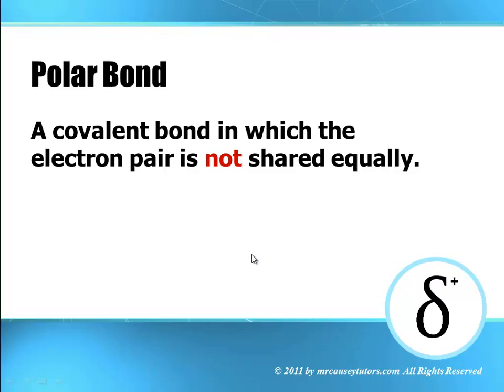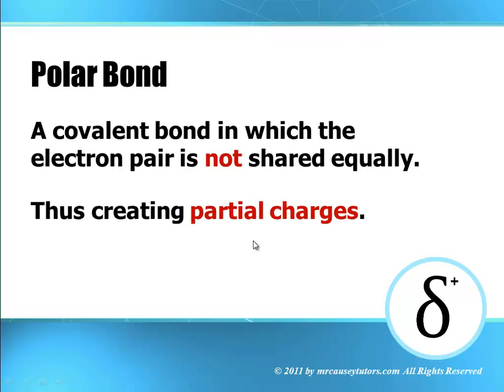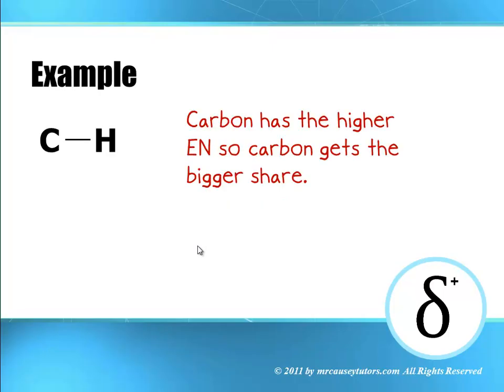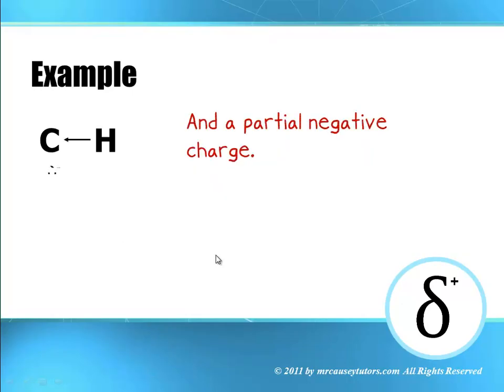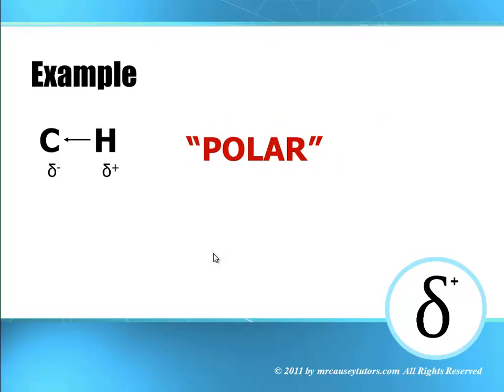A polar bond is a covalent bond in which the electron pair is not shared equally. And because it's not shared equally, it creates a partial charge. Now it's not a full charge like an ionic charge, but it's a charge where the oxygen in an oxygen-hydrogen bond might be getting the electrons a little bit more than the hydrogen. This is called a polar bond. An example is the carbon-hydrogen bond — carbon has the higher electronegativity, so carbon gets the bigger share of the electrons, creating a partial negative charge, making hydrogen partially positive.